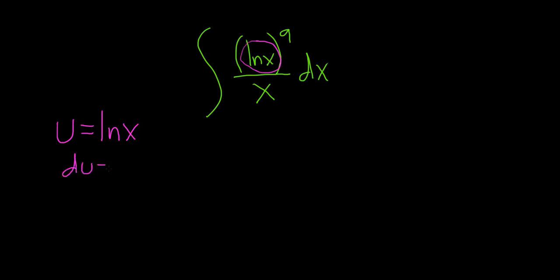So du, the derivative of the natural log of x is 1 over x, and then we have our dx. Then you can see that this actually appears here in the integral. There's our 1 over x dx. That's the same thing as 1 over x dx.